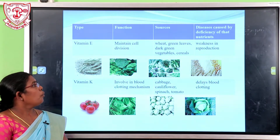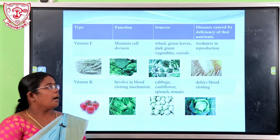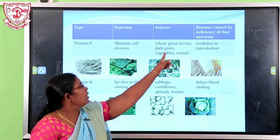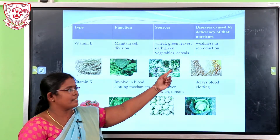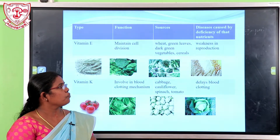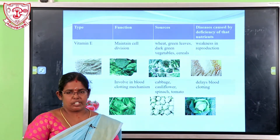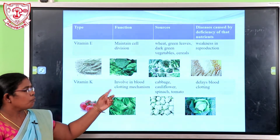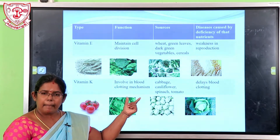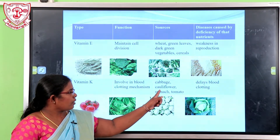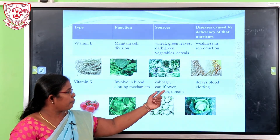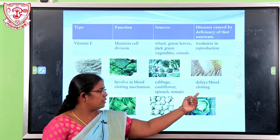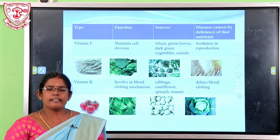Vitamin E maintains cell division. Sources of Vitamin E include wheat, green leaves, dark green vegetables, and cereals. Deficiency of Vitamin E causes weakness in reproduction. The last vitamin is Vitamin K, which is involved in the blood clotting mechanism. Food sources include cauliflower, spinach, and tomato. Deficiency of Vitamin K delays blood clotting.